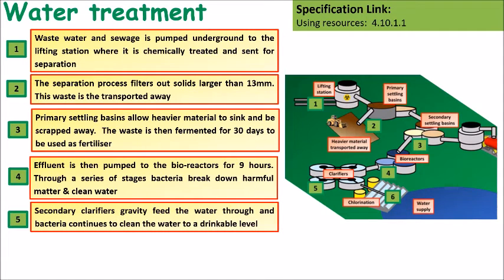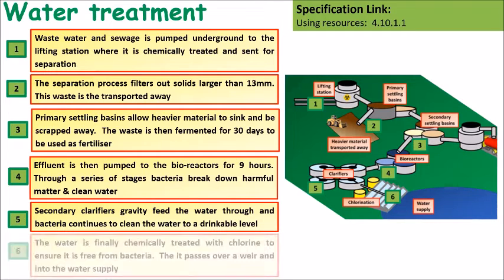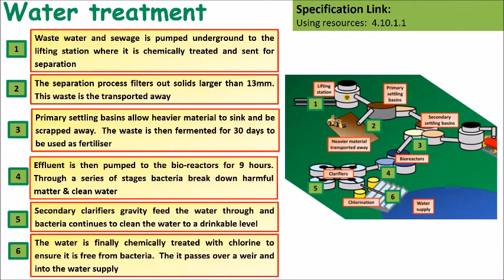Secondary clarifiers are then used — these are gravity fed, so water moves over them, and bacteria continue to be broken down during that process. Finally, the water is chemically treated using chlorine to ensure any remaining bacteria are killed. It can then travel back into the water supply.